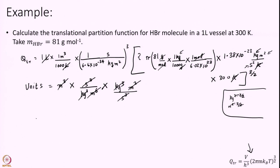After that it is just a matter of punching the numbers correctly on a calculator or computer. I have done this calculation and I get 7.2×10²⁹. As a rule of thumb, remember that the translational partition function is usually very large — on the order of 10²⁰ to 10³⁰ — so what we are getting is actually something reasonable.